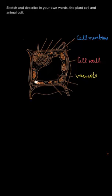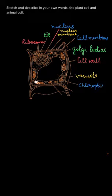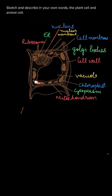In this image, you can see various components of the plant cell like cell wall, cell membrane, nucleus, endoplasmic reticulum, ribosomes, golgi body, chloroplast, mitochondria, and cytoplasm.